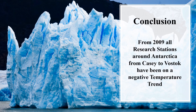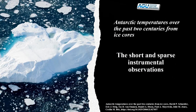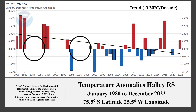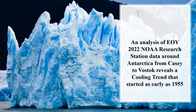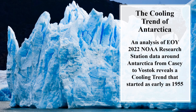From 2009, all research stations around Antarctica, from Casey to Vostok, have been on a negative temperature trend. We did identify the problems with the short and sparse instrumental observations and provided examples of missing data, such as at the Halley Research Station. We leave you with the original conclusion that the Antarctic Research Station cooling trend started as early as 1955.